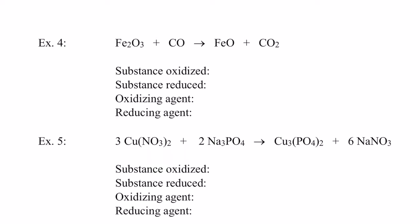Welcome back. Let's assign everybody an oxidation number. Oxygen is two negative in Fe₂O₃ and the iron would be positive three. In CO, oxygen is two negative and carbon would be two positive. On the other side, Fe₂O₃: the oxygen is two negative and here the iron is only two positive. In CO₂, oxygen is two negative for a total of four negatives because there are two oxygens, so that carbon has to be positive four. It looks like iron went from three positive to two positive — to do that it had to gain electrons, so the substance reduced was Fe₂O₃ — or more technically, the iron in Fe₂O₃.